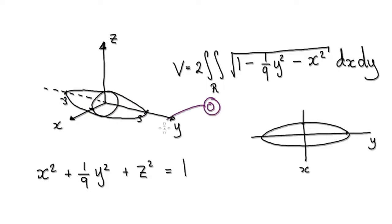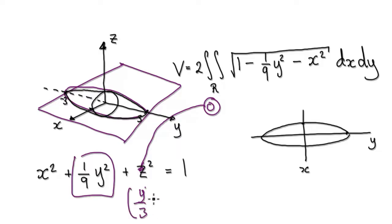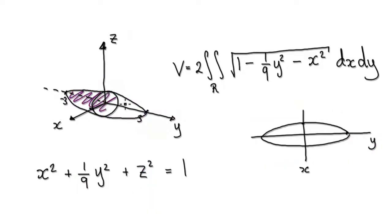If you put zero into the z, you're looking at an elevation of zero — a horizontal sheet of paper — where you're going to get an ellipse with y over 3 squared, where the y has been stretched by a factor of 3. Looking down on this thing, it will look like this.